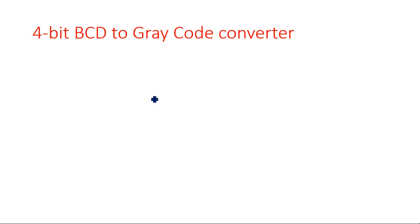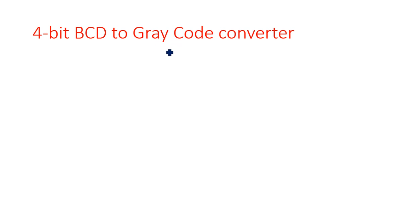To convert BCD to Gray code: BCD is nothing but a maximum of 9, BCD varies from 0 to 9. For 10 and above, we use a two-digit format. Gray code is nothing but a mirror image code or unit distance code. In previous videos I gave the introduction on how to write the truth table and draw the logic circuits for this.